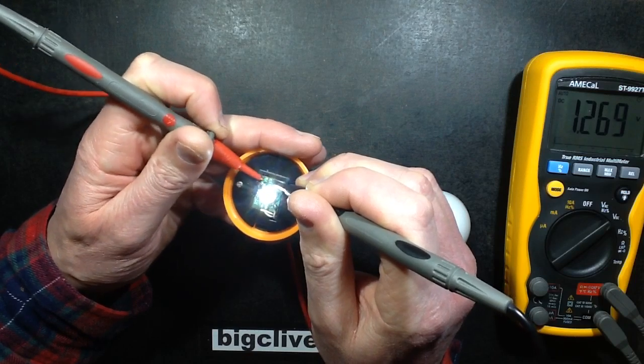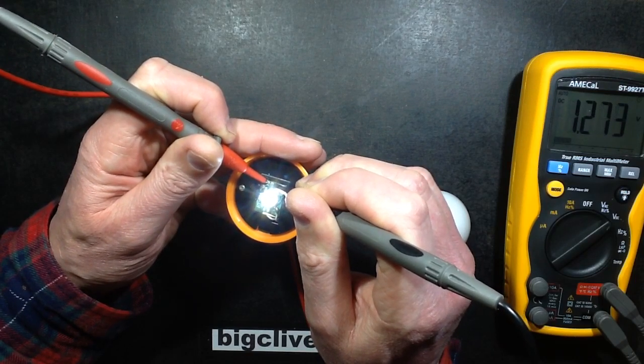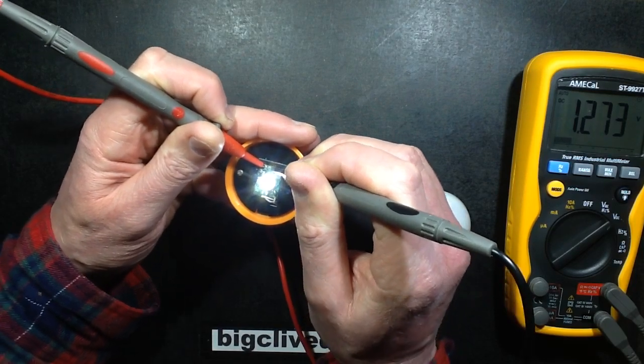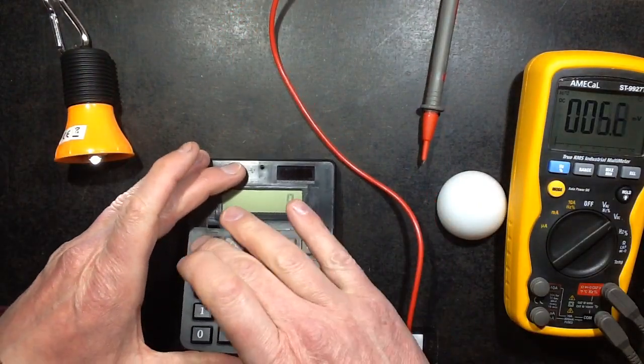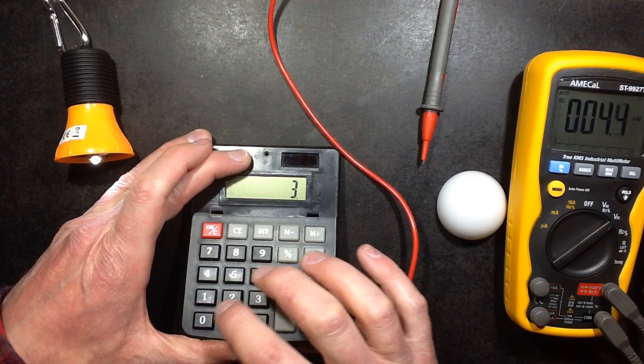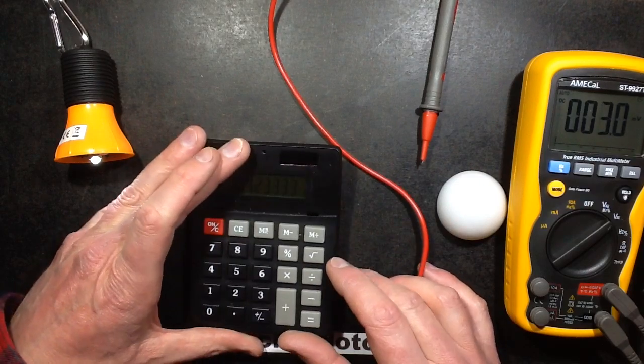1.26, so very little is being dropped across the chip. That's very good. But it's 1.27 volts being dropped across the 30-ohm resistor. 1.27 divided by 30 ohms equals 42 mA.